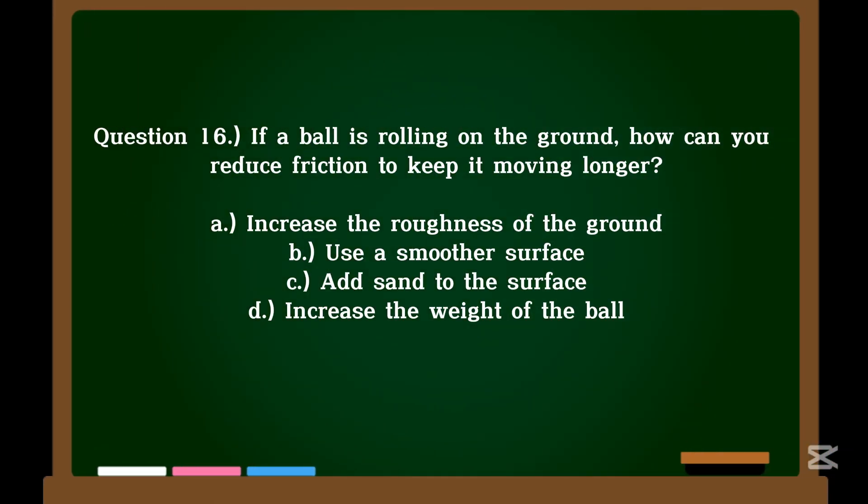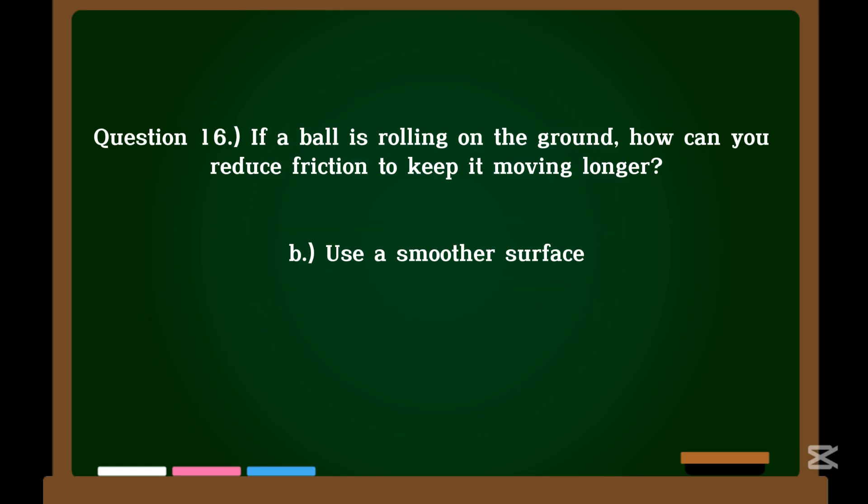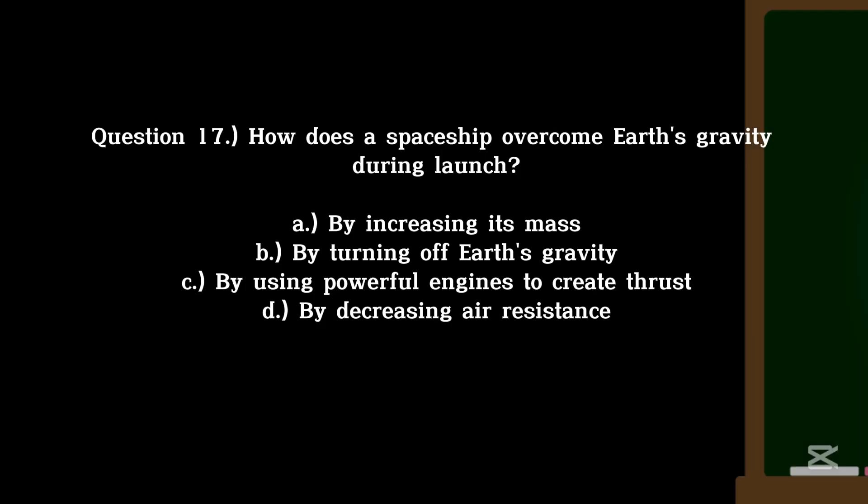Question 16. If a ball is rolling on the ground, how can you reduce friction to keep it moving longer? A. Increase the roughness of the ground. B. Use a smoother surface. C. Add sand to the surface. D. Increase the weight of the ball. Correct answer: B. Use a smoother surface.